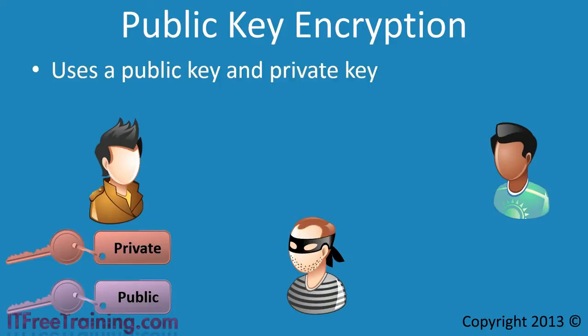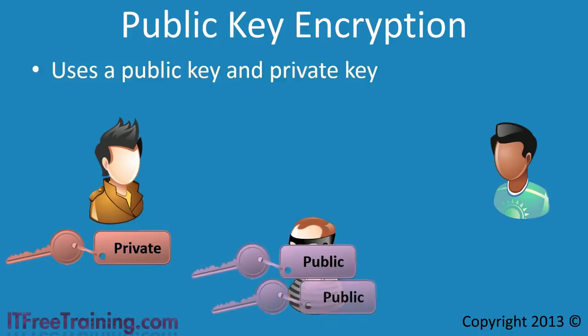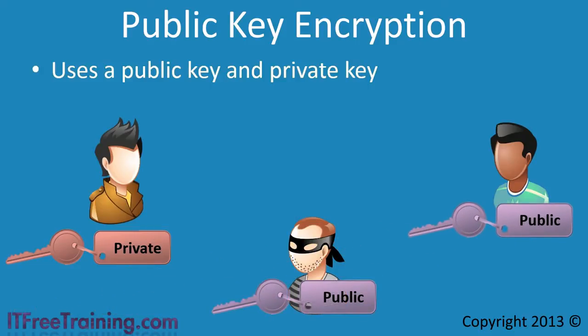With public key encryption, the public key is required to encrypt traffic, however it does not need to be secured. If a third party were to obtain the public key, they would not be able to decrypt any data that was encrypted using it. In order to decrypt the data, you require the private key. The private key needs to be stored securely, but the advantage is the encryption can occur without the private key. This means the private key never needs to be transferred, and thus there is no chance that it can be intercepted by the third party.